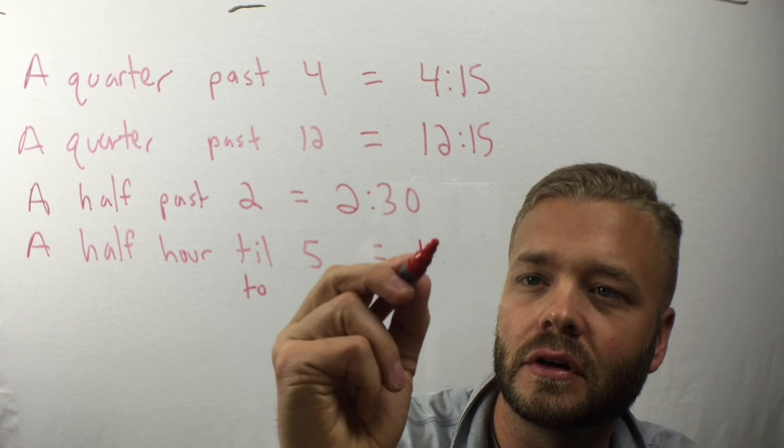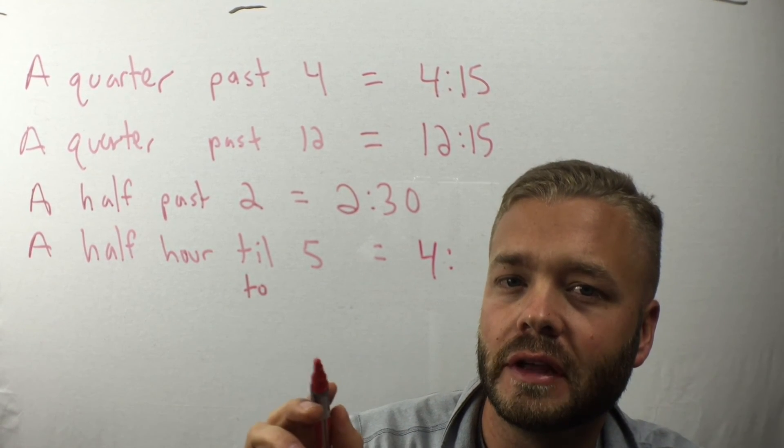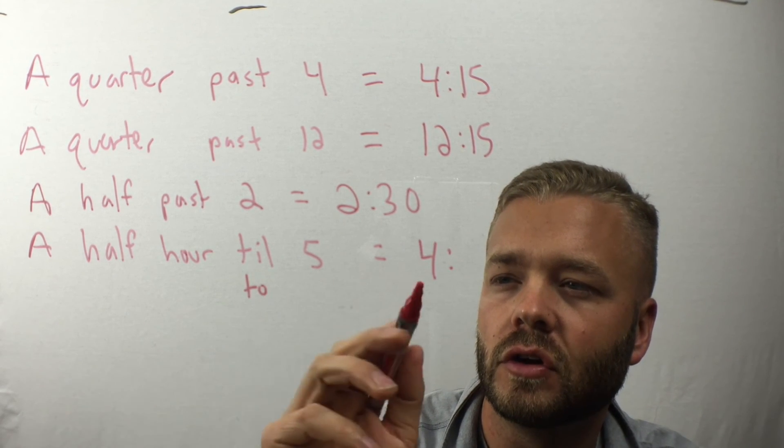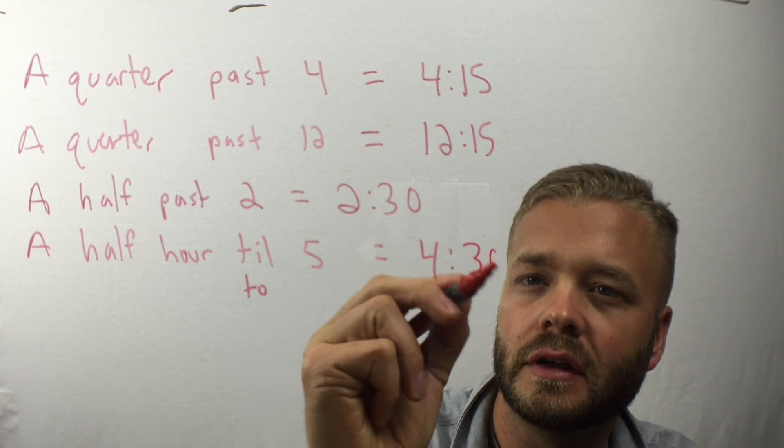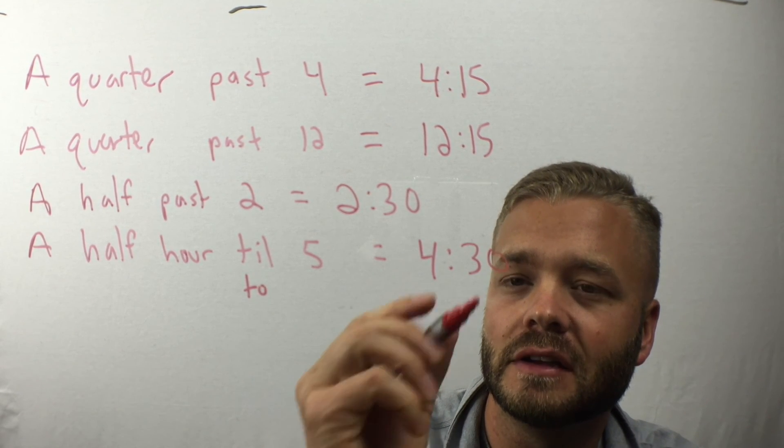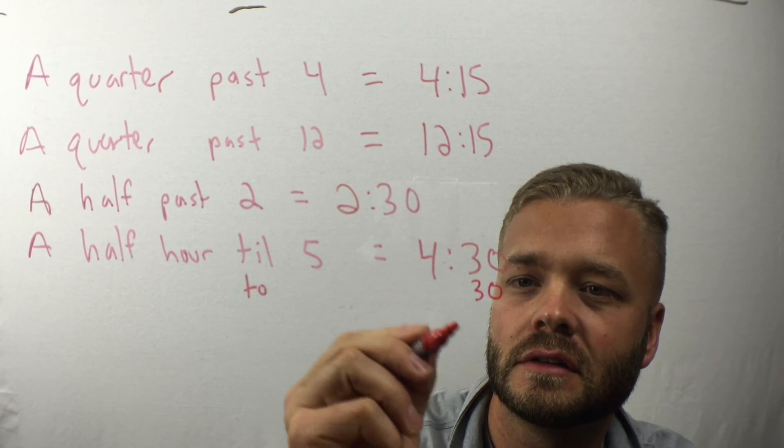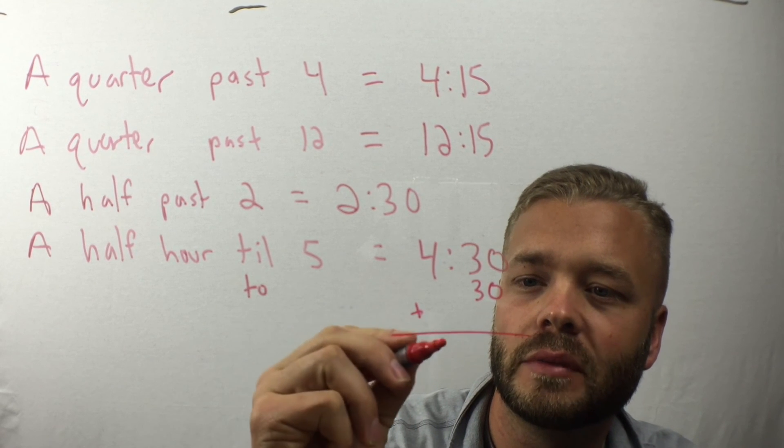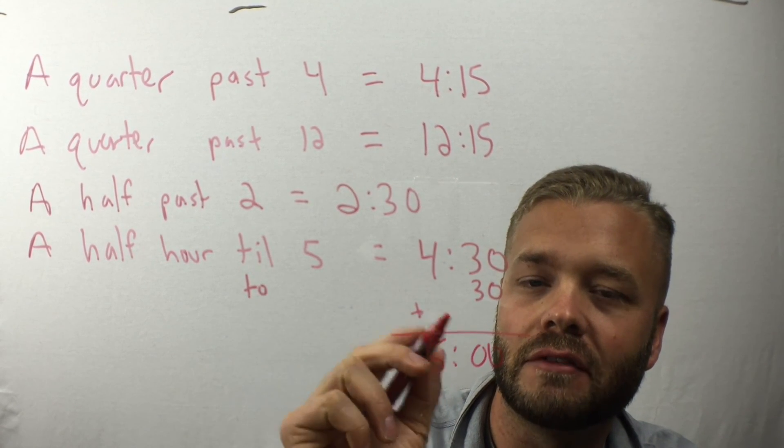But in a half hour more, it will be five. So 30 minutes more, it will be five. So at 4:30, that's a half hour till five. Because 30 more minutes, and it will be five o'clock.